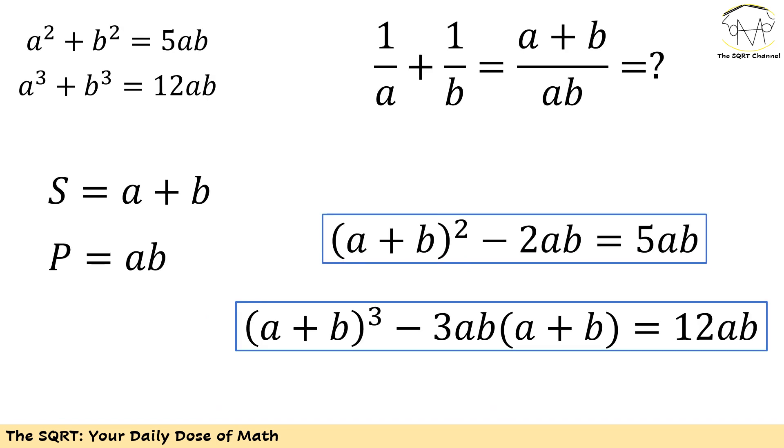To do this I'm going to rewrite what I have. For the first equation which is a² + b², I'm going to write it as (a + b)² - 2ab. The rest is going to be the same. On the other hand, for the equation that has a³ + b³, I'm going to write it as (a + b)³ - 3ab(a + b). The rest is going to be the same again.